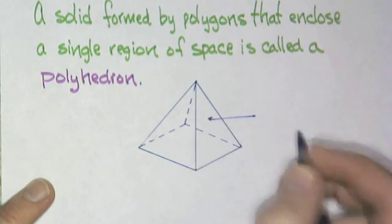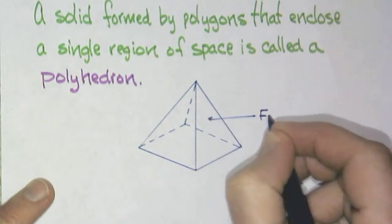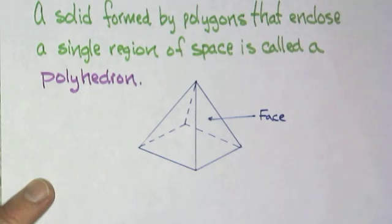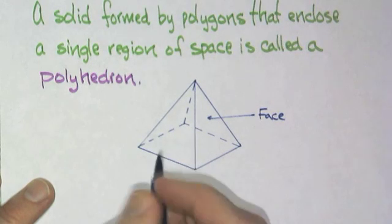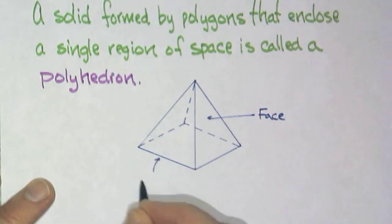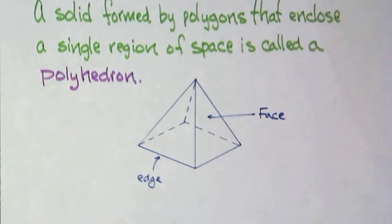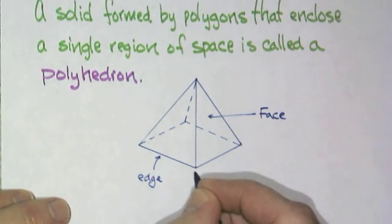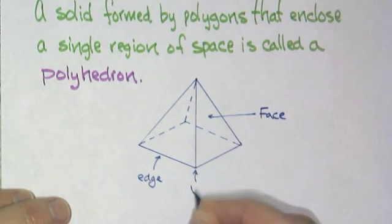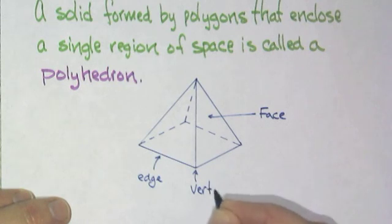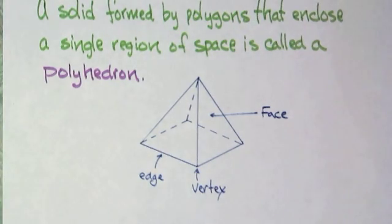Each polygon would be considered a face of the polyhedron. Where two faces meet would be an edge. And where three or more edges meet would be a vertex. Just like before when we did two-dimensionals. So now we have edges, faces, and vertices.